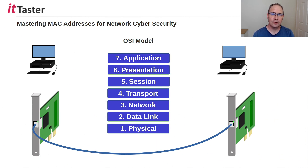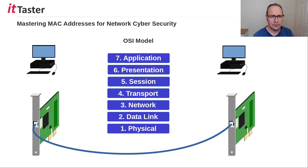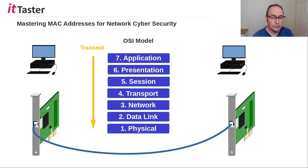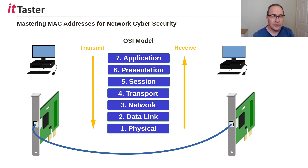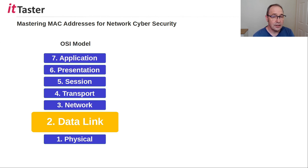Before going further, it's important to talk about where MAC addresses fit into the network communication process. When network devices communicate, they must follow a series of steps as set out in the seven layers of the OSI model. This includes packaging information from the layers above when transmitting, before reaching the final layer — the physical layer — where it is turned into a signal to represent bits. The receiving device then decodes the signal and unpacks the information. We're interested in the layer above the physical layer: the data link layer.